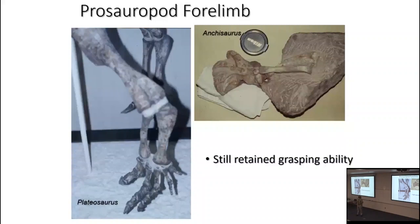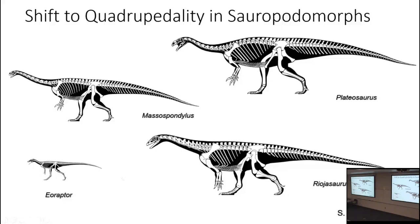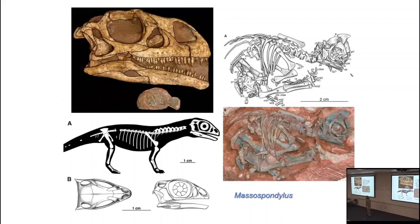These core prosauropods retained the ancestral dinosaurian hand, with very small digits four and five, and the ancestral saurischian attribute of having a great big thumb claw — that's Anchisaurus there, and Plateosaurus. However, we go from these obligate bipedal animals to obviously quadrupedal later sauropods, but that transition occurs at the next phase in their history — at least for adults.